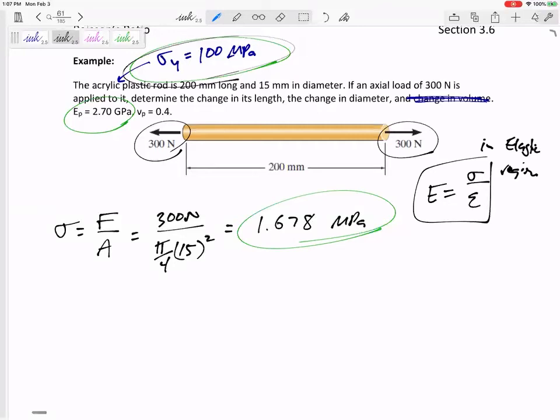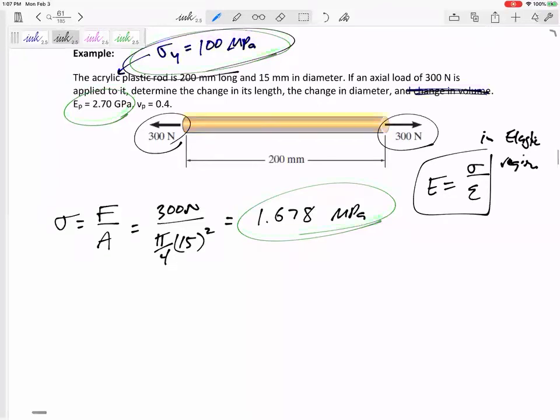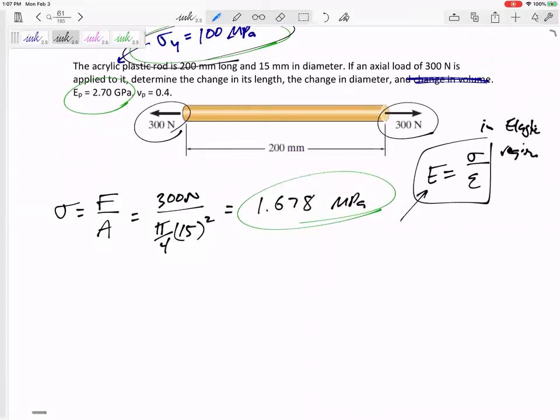But if your stress is less than the yield, then yes, you're in the elastic region. So we're gonna plug in 2.7 right here, we're gonna plug in 1.678 right there, and we're gonna get the strain. I'm gonna plug in 2.7, but I'm gonna be very careful with my units. This is 2.7 GPa, this is MPa, so I'll say 2,700 MPa equals 1.678 MPa over strain. So the strain is 0.0006288.